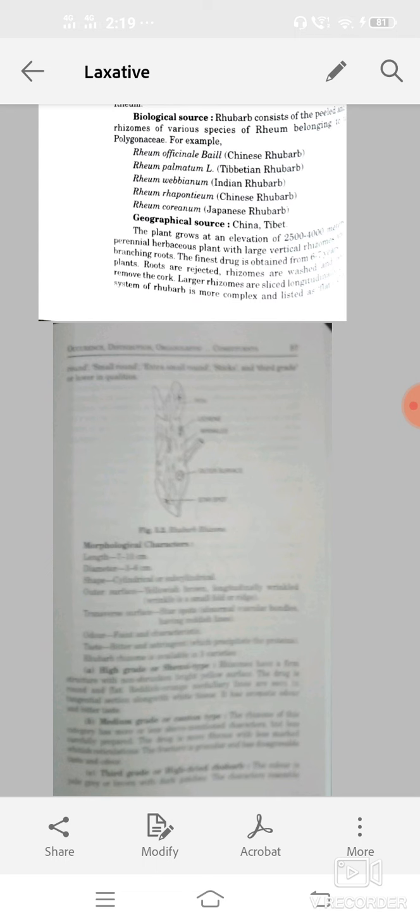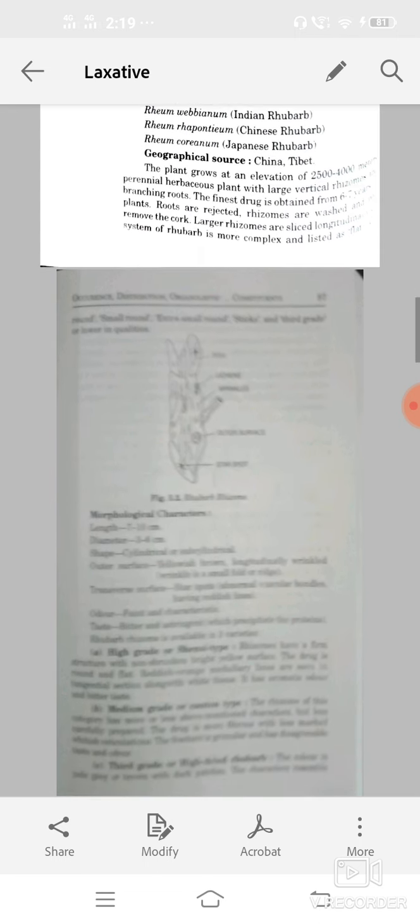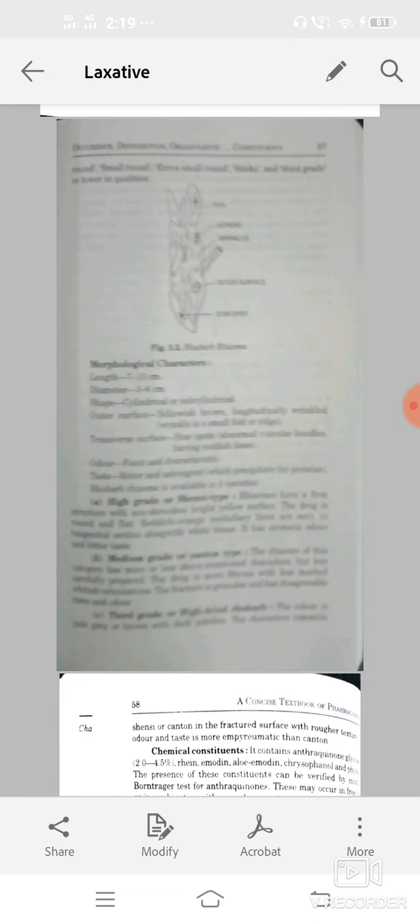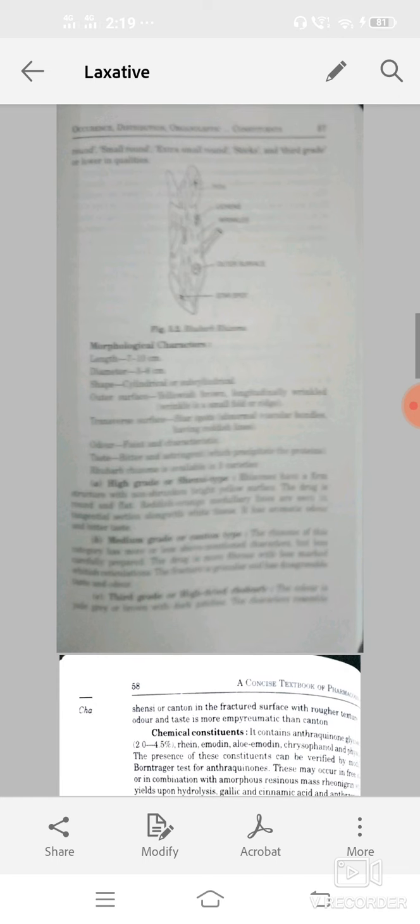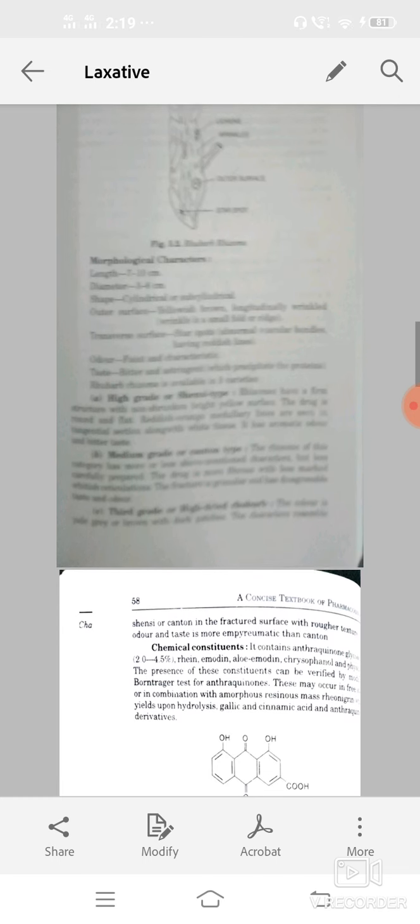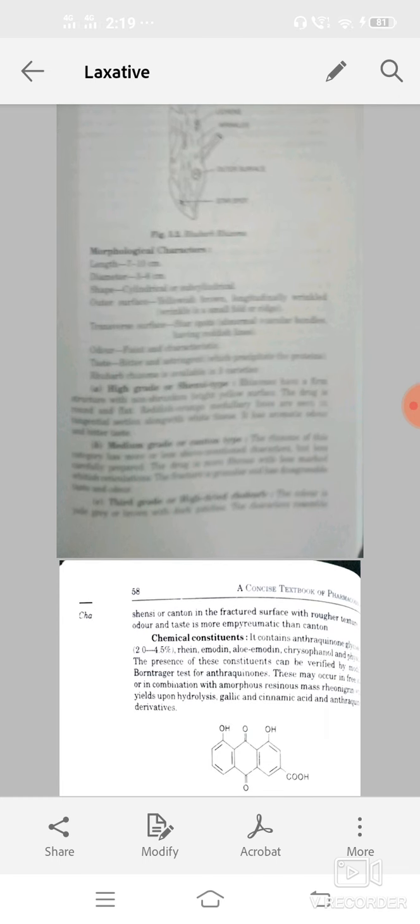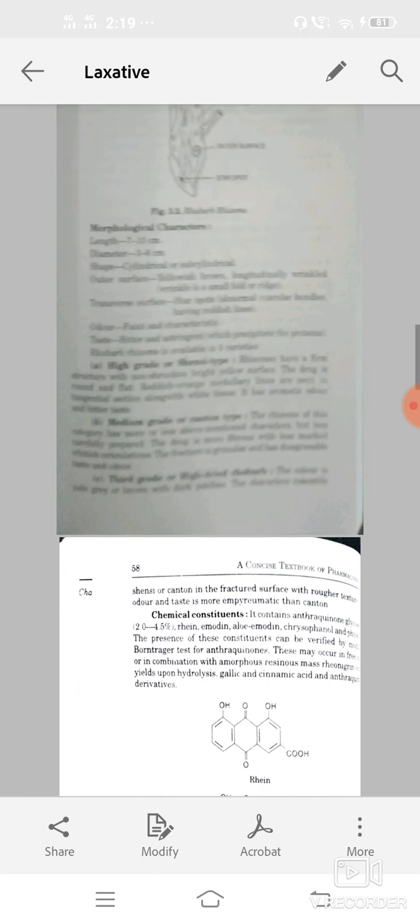Morphological characters: length 7 to 10 cm, diameter 3 to 6 cm, shape cylindrical, outer surface yellowish-brown, longitudinal or wrinkled transverse surface has star spots, means abnormal vascular bundles. Odor faint or characteristic, taste bitter or astringent.